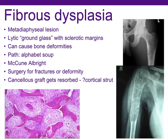Fibrous dysplasia is another common lesion found in the proximal humerus and femur. These are metadiaphyseal lesions with a lytic ground glass appearance, and on pathology they have the alphabet soup appearance. This can be associated with syndromes such as McCune-Albright, with café au lait spots and endocrinopathies, and Mazabraud syndrome, which has associated soft tissue or intramuscular myxomas. When operating on these patients for fracture or deformity, cancellous bone graft is not used as it gets resorbed. Cortical strut grafts are more effective in maintaining structural support.